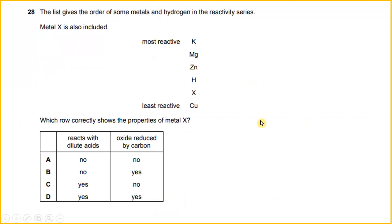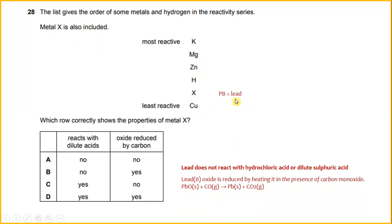Number 28. The list gives the order of some metals and hydrogen in the reactivity series; metal X is also included. From the bottom you have copper, then X, hydrogen, zinc, magnesium, and lead. So what is X? X is actually lead. Lead does not react with hydrochloric acid or dilute sulfuric acid, and lead oxide is reduced by heating in the presence of carbon monoxide. So the answer will be B.